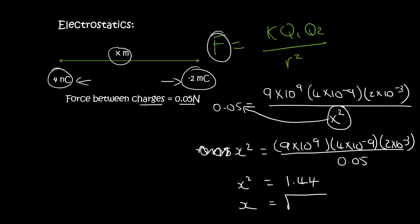And so x is going to be equal to the square root of 1.44. So therefore, x is equal to 1.2. 1.2 what? The unit is meters.